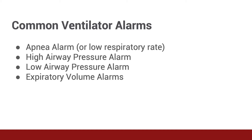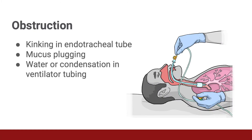High expiratory volumes can indicate patient distress, agitation, and high demand for air. If there is difficulty bagging the patient through the endotracheal tube, perform inline suction. Check patient positioning as well, since a patient who is flexed or has a bent neck can introduce kinking in the tubing. Mucus plugging is a common cause of airway obstruction, either in the endotracheal tube or in the larger airways. Check the ventilator tubing for water or condensation that may collect, as this can trigger airway pressure or obstruction alarms.